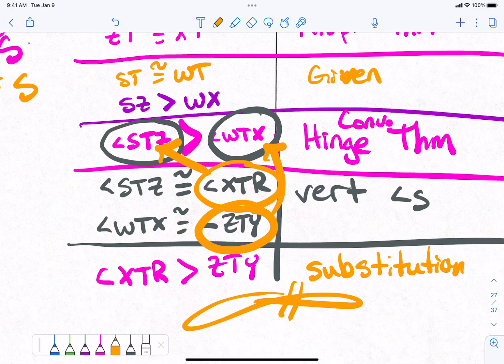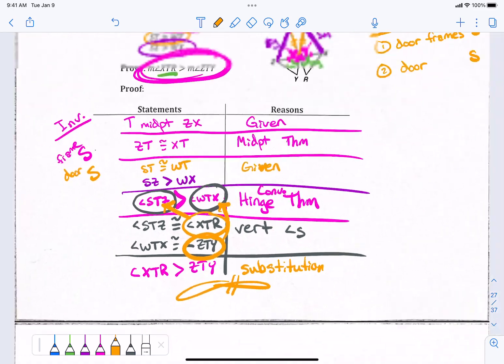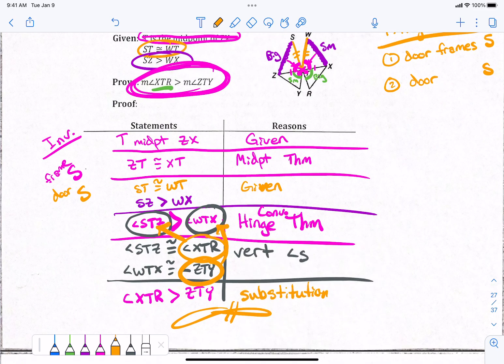Does that make sense? Yeah. Like those crisscrossy things and vertical angles. Make sense? We good to go? That was a little bit longer of a proof. Yeah. But I like it. It was good. Okay?